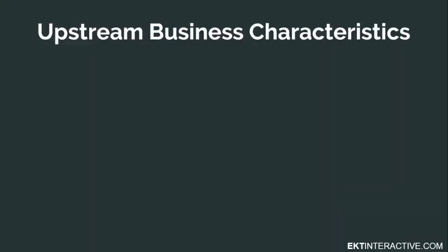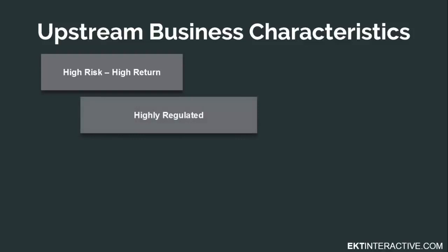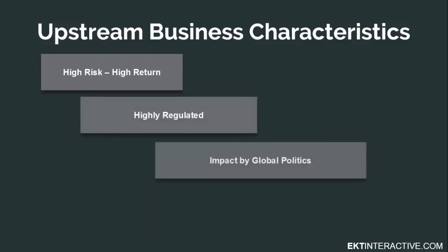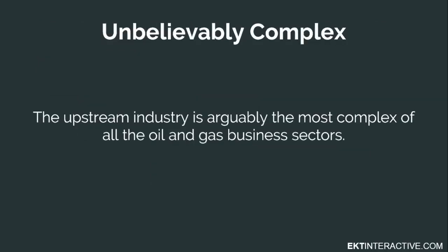It is important to note that there are four key business characteristics of upstream. It is a high-risk, high-return segment. It is highly regulated. It is impacted by global politics. And it is very technology-intensive. The upstream industry is arguably the most complex of all oil and gas business sectors.